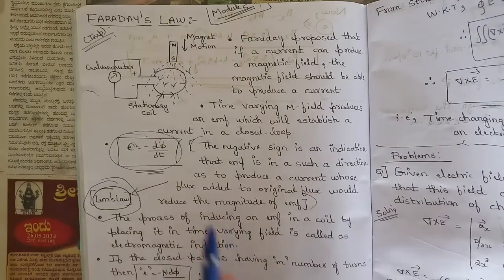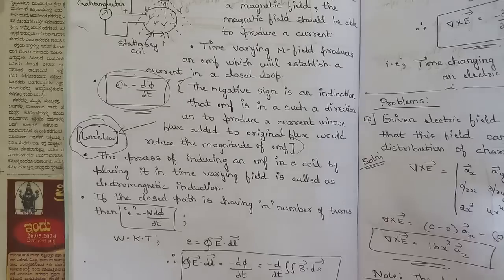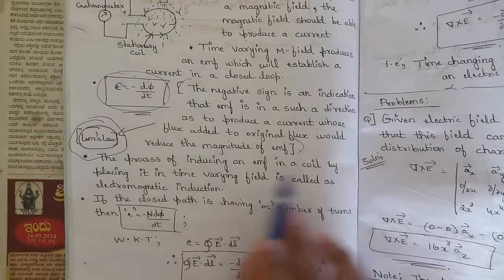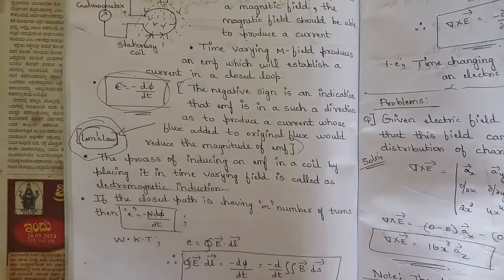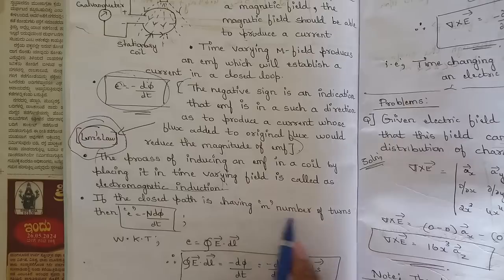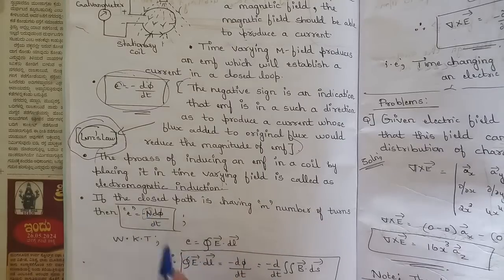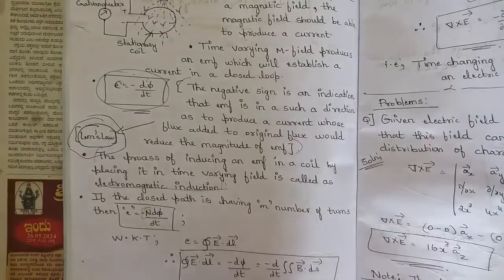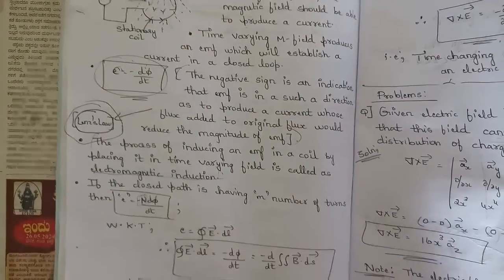The process of inducing an EMF in a coil by placing it in a time-varying field is called electromagnetic induction. If the closed path has N number of turns, we can write E = -N dφ/dt, where N is the number of turns. But in general, EMF E is defined by the line integral of E·dl.